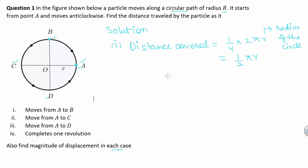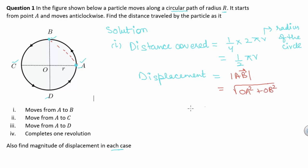Now, if we have to find the displacement in this case, displacement is equal to the shortest distance between points A and B. So AB would be the displacement of the particle. The magnitude of AB would be equal to √(OA² + OB²). Putting in the values of OA and OB, we get √(r² + r²), which is equal to √2·r.